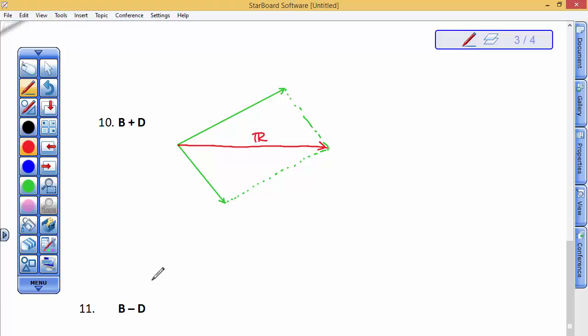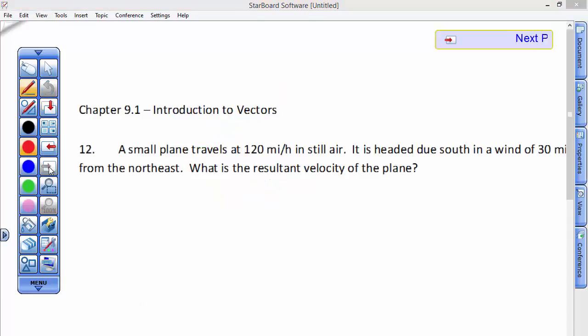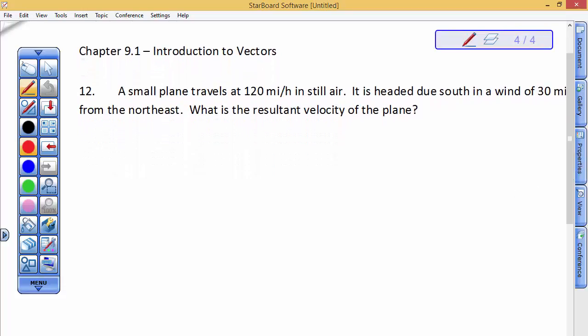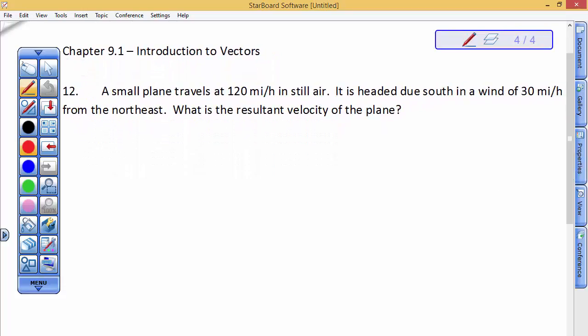For B minus D, I would just draw B and then draw D in the other direction. I'd like to take you to a story and try to give you a feel for how this might work. But it does require drawing a scale drawing. Go ahead and read this problem.